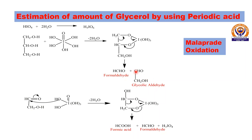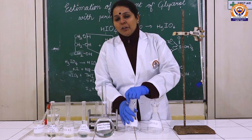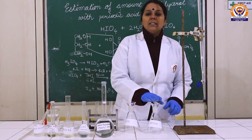The glycolic aldehyde still has one carbon-carbon bond with carbonyl and alcoholic group at a vicinal position. So glycolic aldehyde reacts with another mole of periodic acid to form a complex which undergoes carbon-carbon bond cleavage to give one mole of formic acid and one mole of formaldehyde. So from one mole of glycerol we obtain two moles of formaldehyde and one mole of formic acid. This oxidation is called Malaprade oxidation, and for this we will prepare a blank solution and the sample solution.